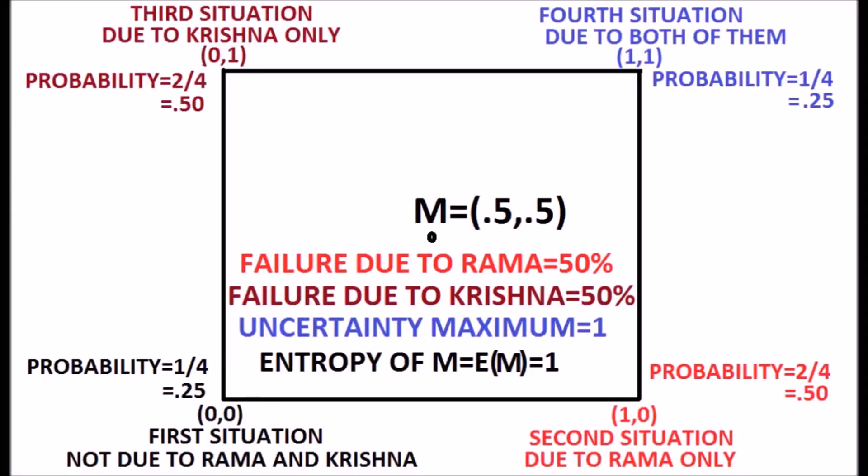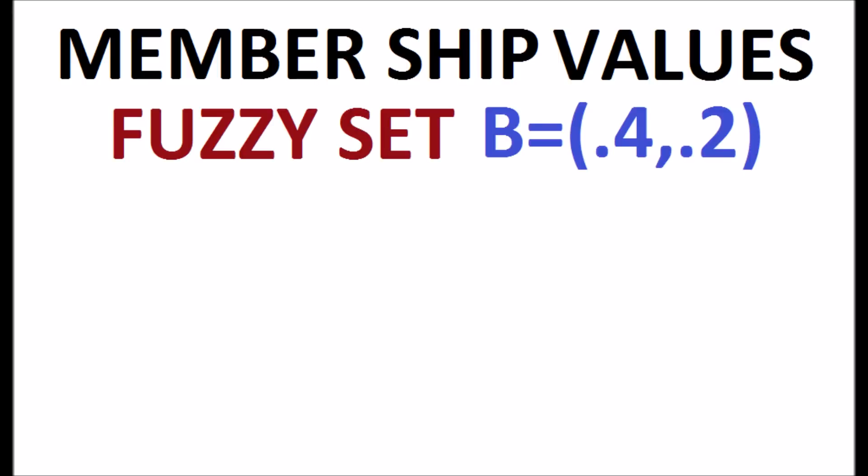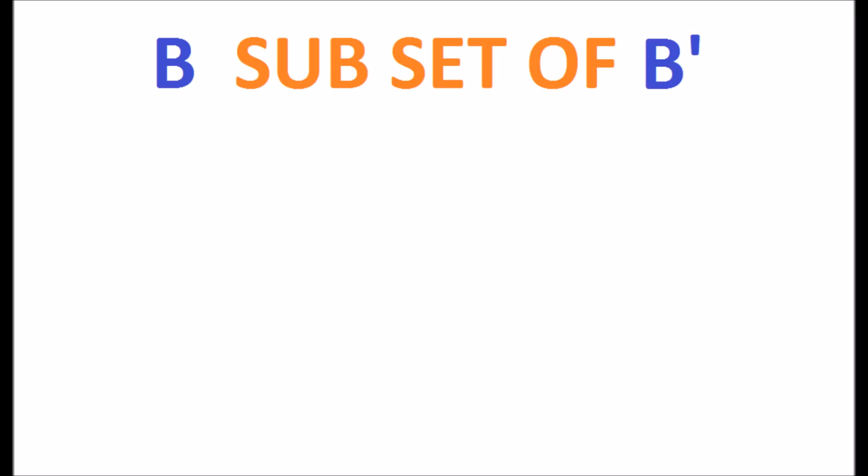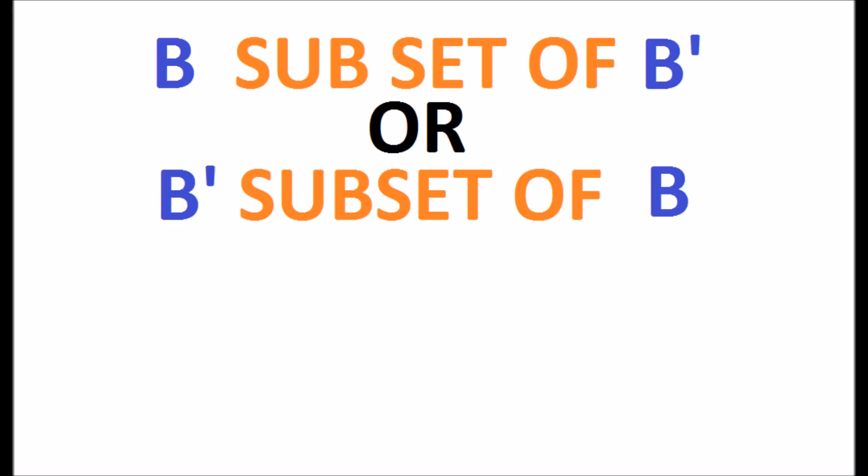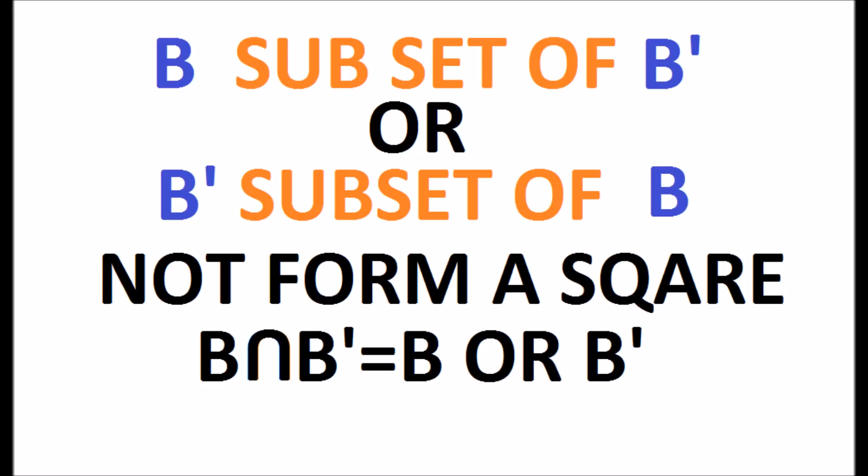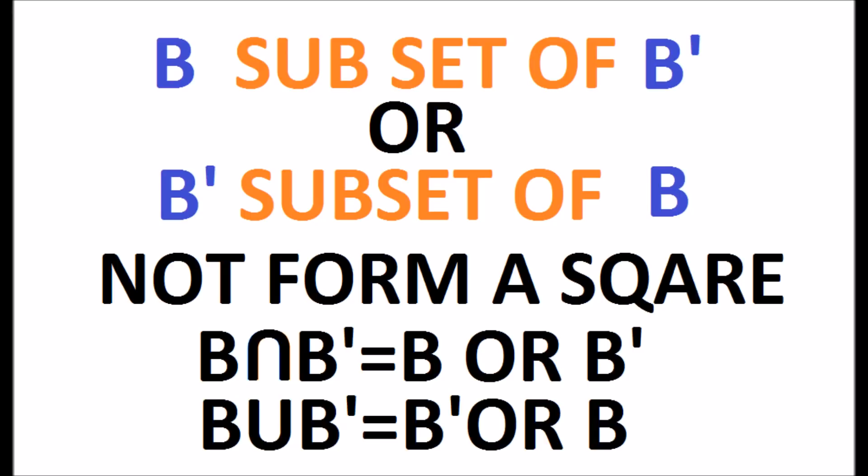Membership values of the fuzzy set B is equal to 0.4, 0.2 which is less than the complement of B which is equal to 1 minus 0.4, 1 minus 0.2 which is equal to 0.6, 0.8. In this case, the fuzzy set B is the subset of its own complement B. If B is a subset of B complement or B complement is a subset of B, nor form a square or rectangle inside the unit square. The reason is B intersection with B complement is equal to B or B complement. B union with B complement is equal to B complement or B.